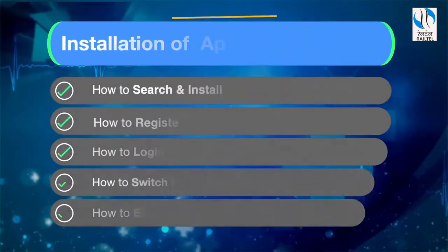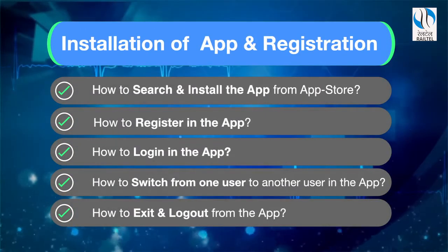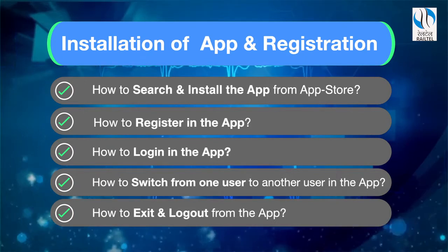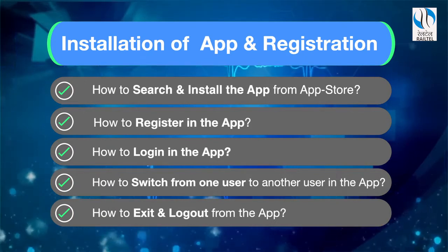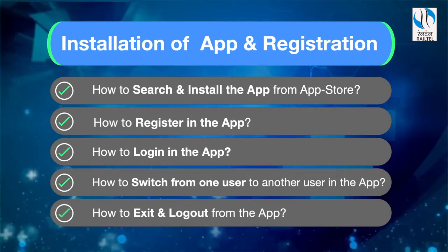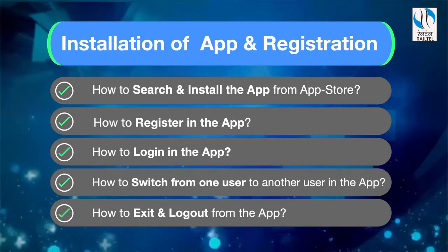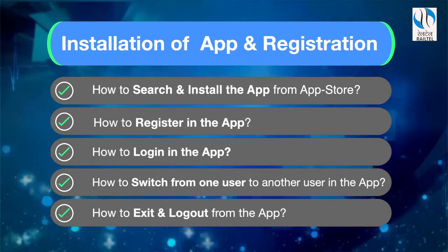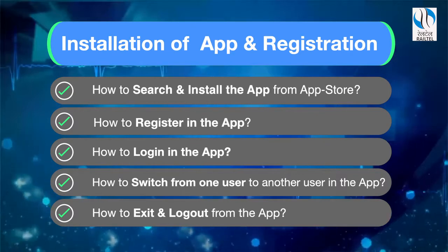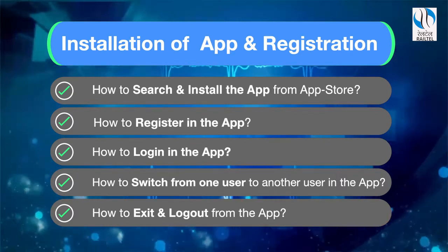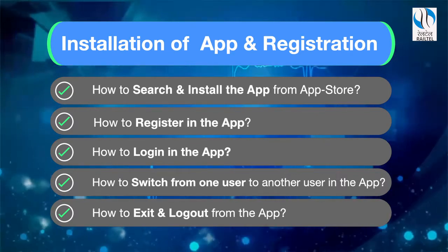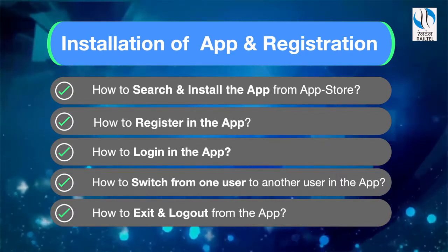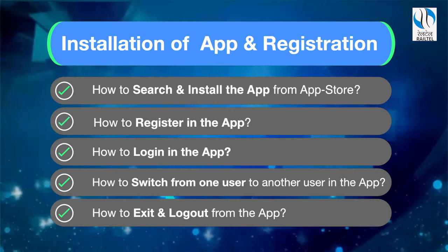In the first part we will cover the following five topics: 1. How to search and install the app from the app store. 2. How to register in the app. 3. How to log in to the app. 4. How to switch from one user to another user in the app. 5. How to exit and log out from the app.